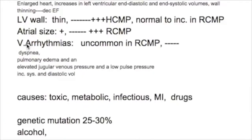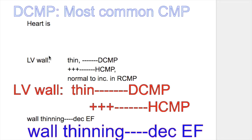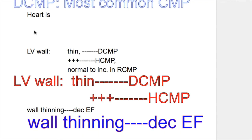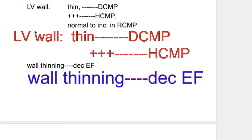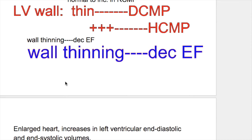The left ventricular wall thickness is thin in dilated cardiomyopathy, normal to increased in restrictive cardiomyopathy, and markedly increased or thick in hypertrophic cardiomyopathy. Dilated cardiomyopathy is the most common cardiomyopathy. The heart is dilated with flabby, thin walls in dilated cardiomyopathy, and markedly hypertrophied in hypertrophic cardiomyopathy.